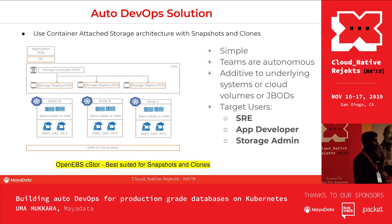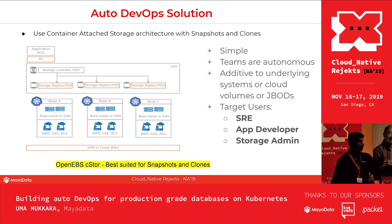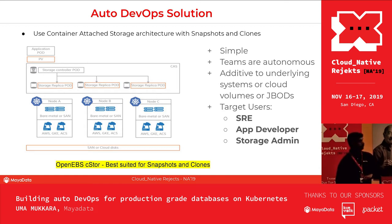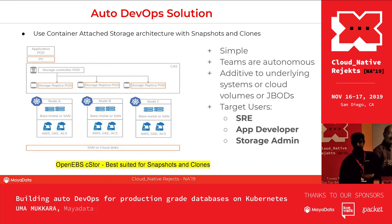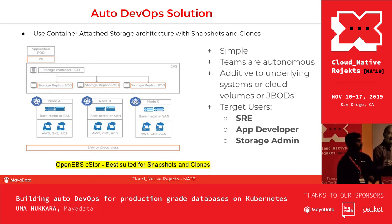CStore is one of the data engines of OpenEBS, best suited for snapshots and clones. It's a container-attached storage architecture where the data plane runs entirely within a container, making it easy to deploy. The snapshot and clone capabilities follow well-known Kubernetes APIs — we have snapshot provisioners so you can programmatically take snapshots, and cloning is simply spinning up one more PVC.